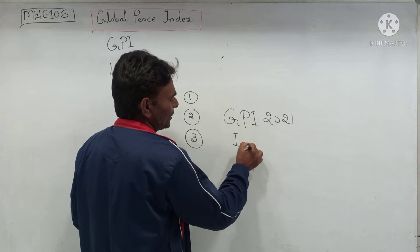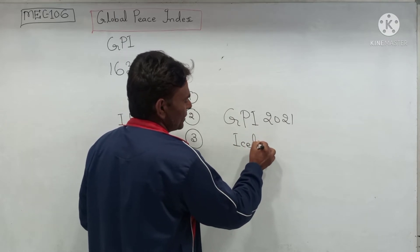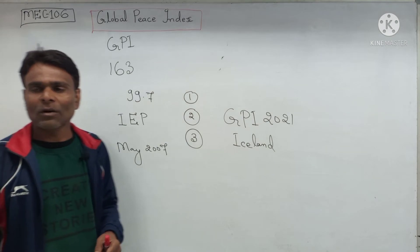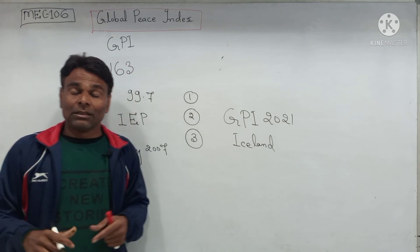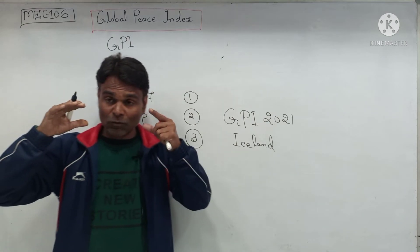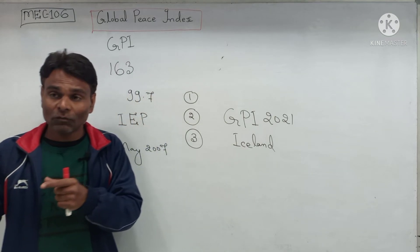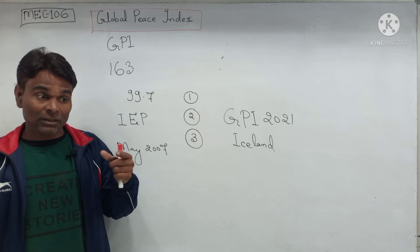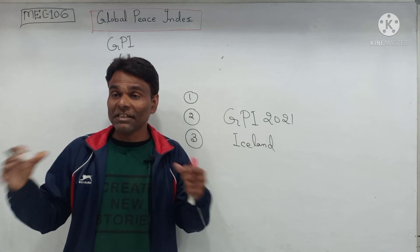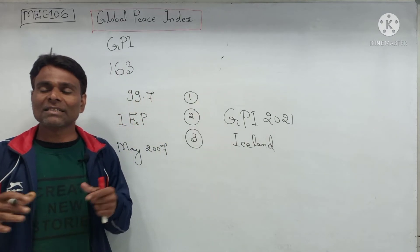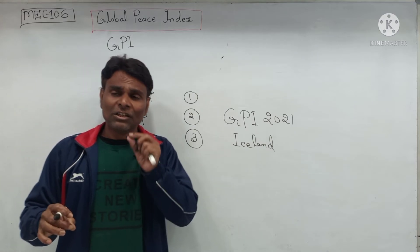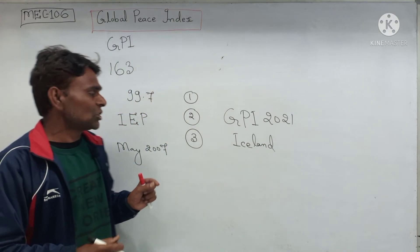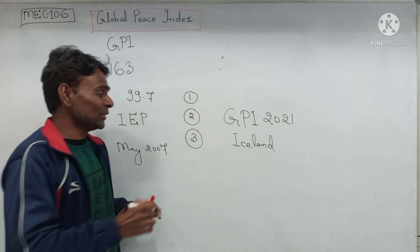In GPI 2021, Iceland got first position as the most peaceful country. New Zealand, Denmark, and Portugal are also among the most peaceful countries of the world. On the other end, Afghanistan, Syria, and Yemen are considered the least peaceful countries.